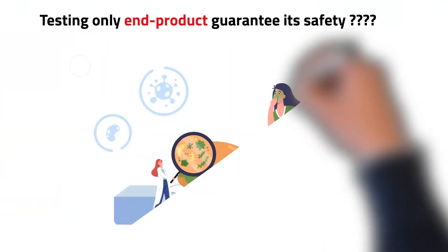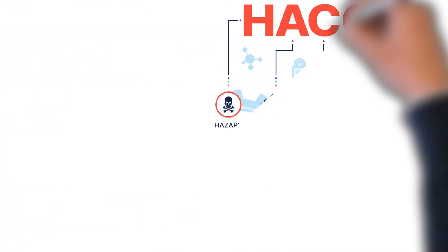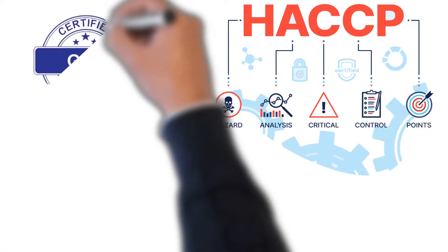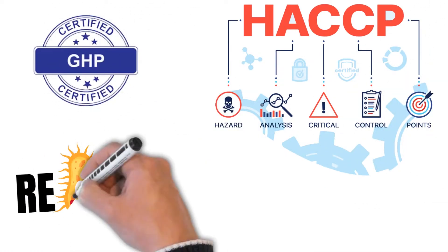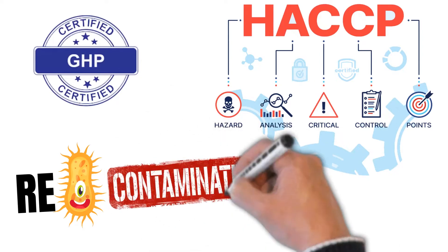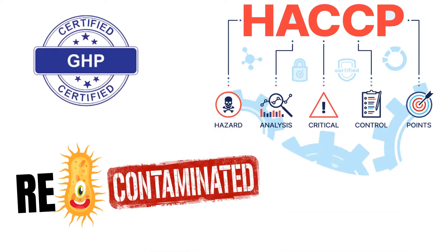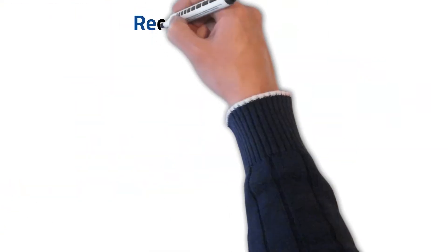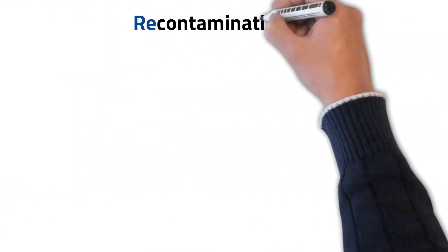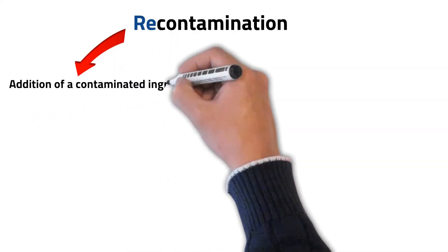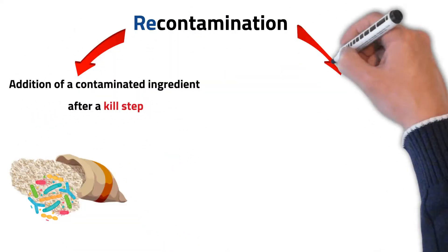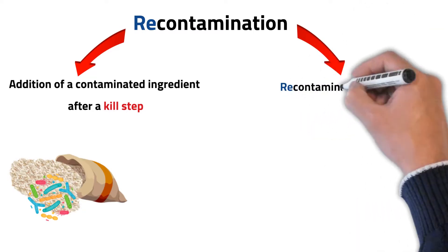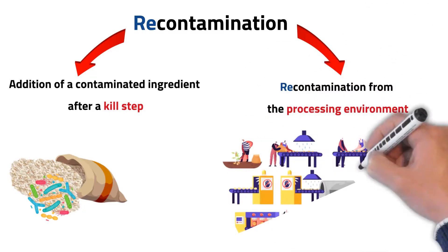Can you guarantee food safety by testing only the end product? Definitely no — the reason is your HACCP plan or good hygiene practices may not be strong enough against recontamination. In the food industry, recontamination can happen in two different ways: adding a contaminated ingredient after the killing step, or by the processing environment.